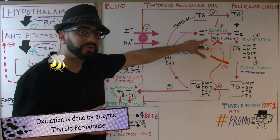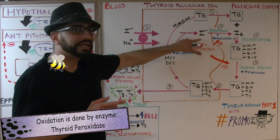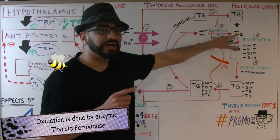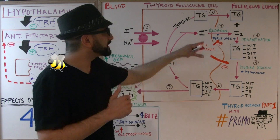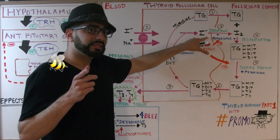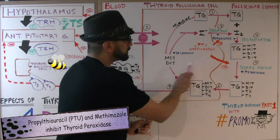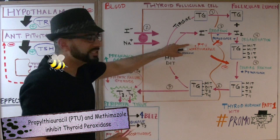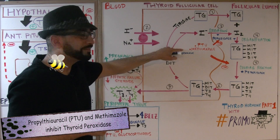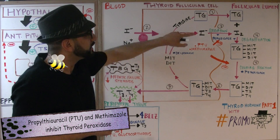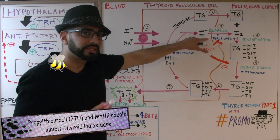Step 3 is oxidation. Oxidation is done by a specific enzyme referred to as thyroid peroxidase. It's going to take the iodide and convert it into iodine — a very important step performed by thyroid peroxidase. We also have two medications here: PTU (propylthiouracil) and methimazole, which inhibit that specific enzyme, thyroid peroxidase.